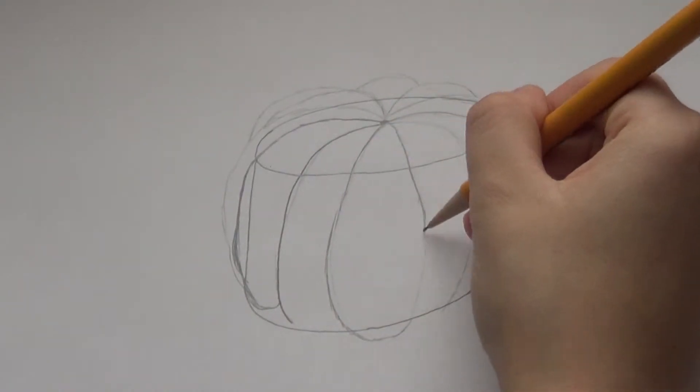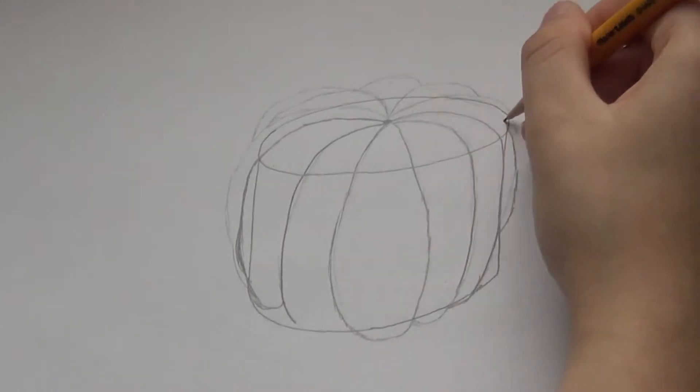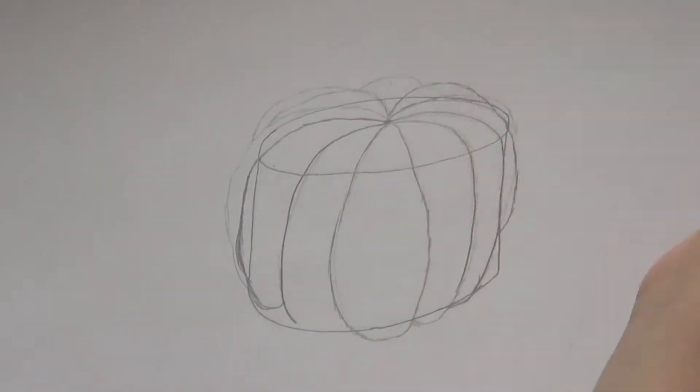So I sketched those lightly first and now I'm going to go over them a second time with my pencil to make the lines darker and erase that cylinder.